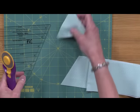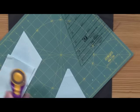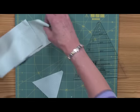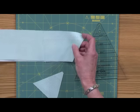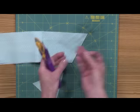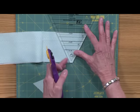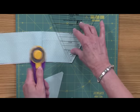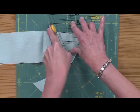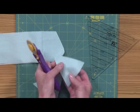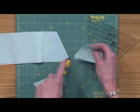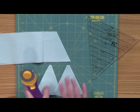Now you have two triangles. What you can do is just rotate your mat, line the ruler up again, and cut two more triangles in the other direction. Each cut will give you two triangles. So this is how you cut the A triangle.